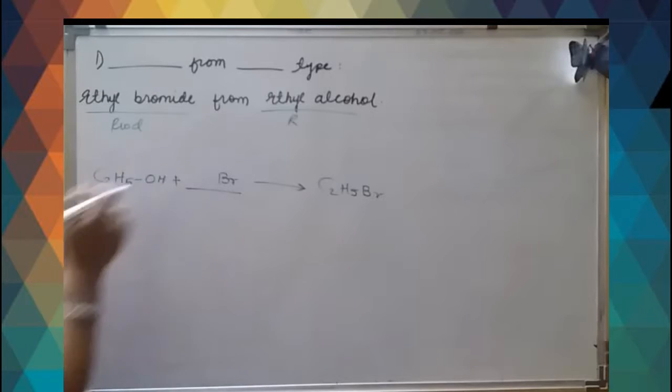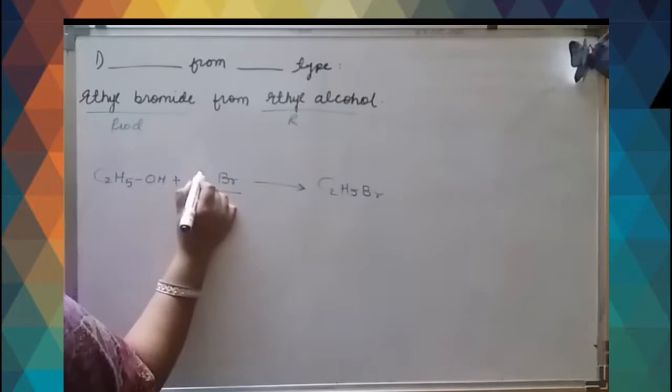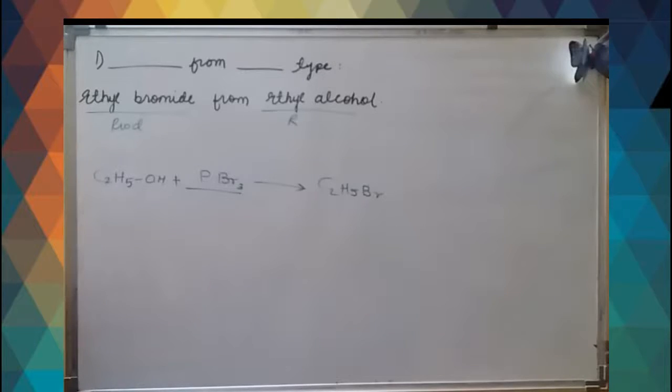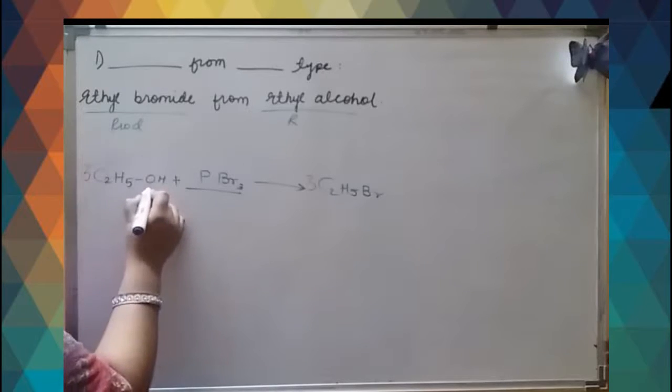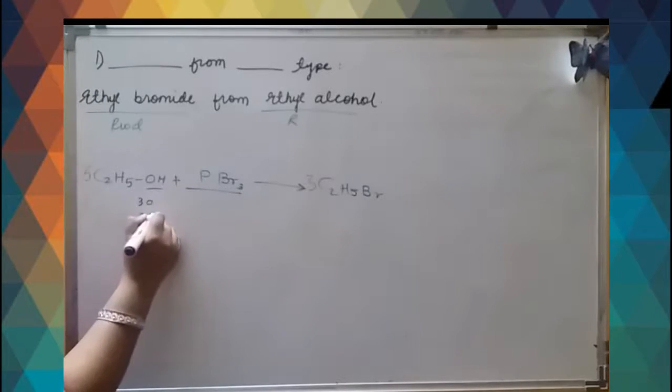So we know that in our reagent what we add is Br. What you will add? PBr3. Then balance it. If there are three bromine here, that means there are three C2H5. So we will get 3C2H5Br. What is remaining? From here 3OH and P, so H3PO3.